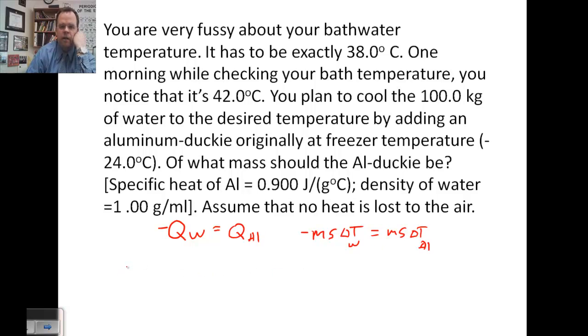The mass of the water, 100 kilograms, we need to change that to grams. So that would be 100,000 grams. So we multiply by 1,000. And if it's 100,000, if we have 1 gram per milliliter, so we know that this is 100,000 grams.